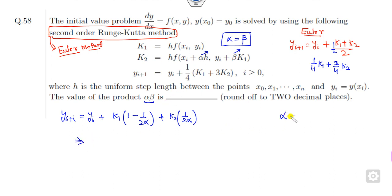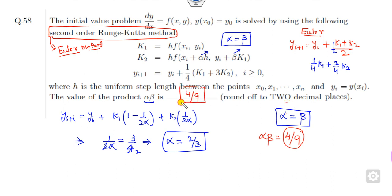First, I found that alpha equals beta. Now, if you compare the coefficient of k2, 2α equals 3/4. So what is alpha? Alpha will be 2/3. Once alpha is 2/3, beta is also 2/3. So what is alpha times beta? That is 4/9, which you can convert to two decimal places.